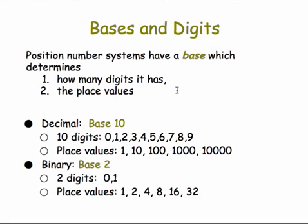The base of the number system determines how many digits it has and the place values. In base 10, decimal, there are 10 digits and the place values are all powers of 10. In base 2 binary, the digits are 0 and 1, and their place values are all powers of 2: 1, 2, 4, 8, 16, and so forth.